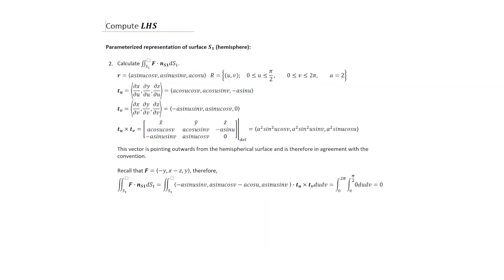Now let's compute the flux from the hemispherical surface. It's easier to work with a parametrized representation — set this up as a problem in spherical coordinates with the radius fixed at a = 2. The parametrization uses the standard spherical coordinate functions but with a as a constant. Because it's a hemisphere, u (the polar angle) only extends to π/2 rather than π, while v (the azimuthal angle) goes the full circle from 0 to 2π.